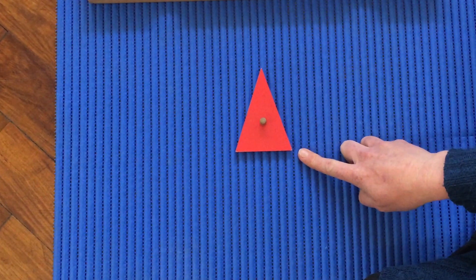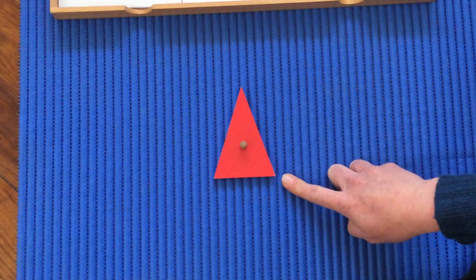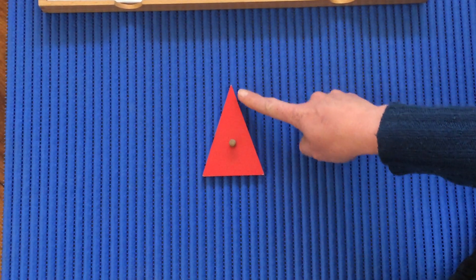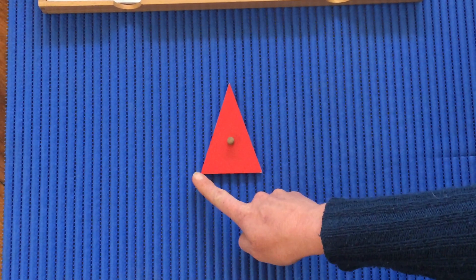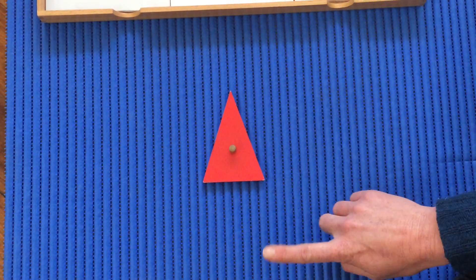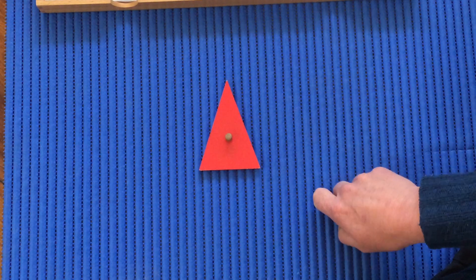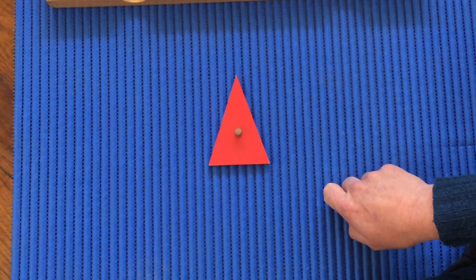This triangle has two sides that are the same length. This side and this side. Triangles that have two sides that are the same are called isosceles triangles.